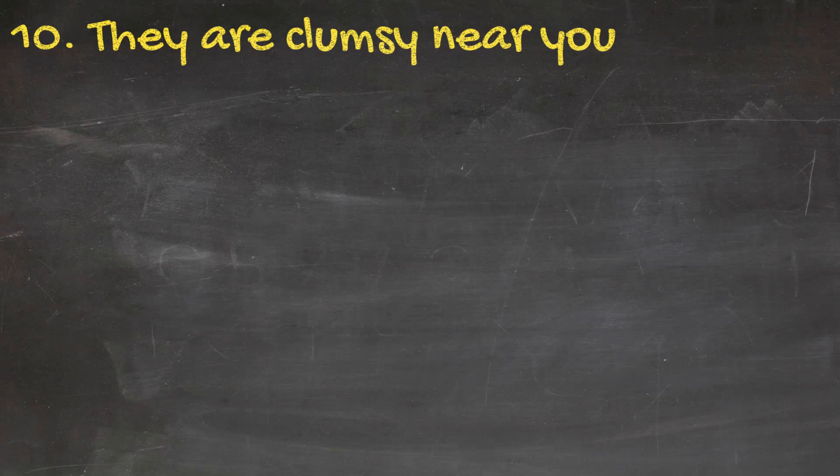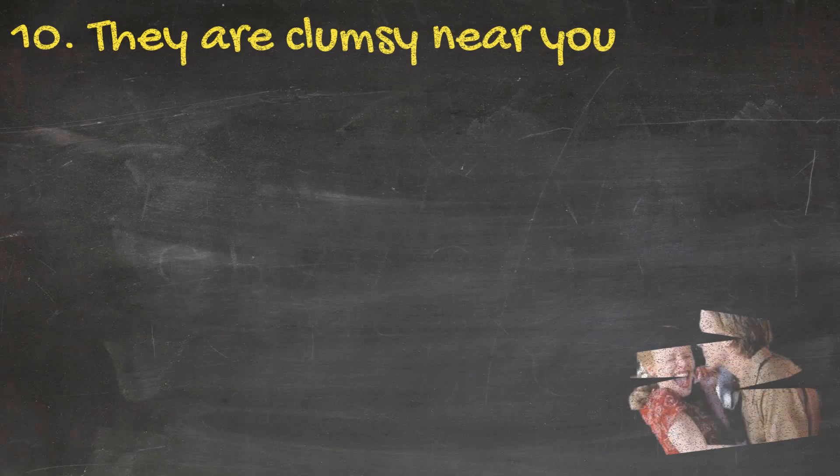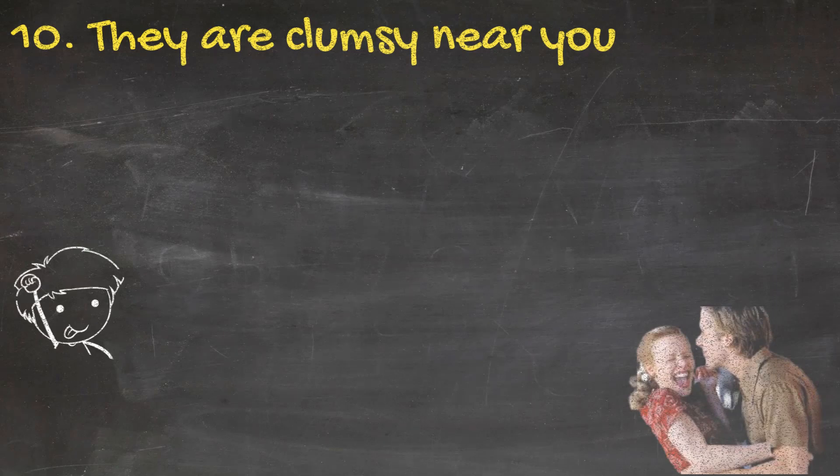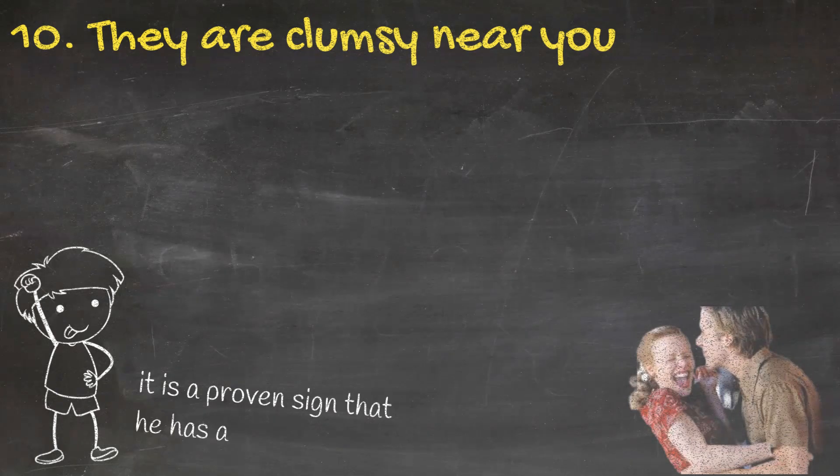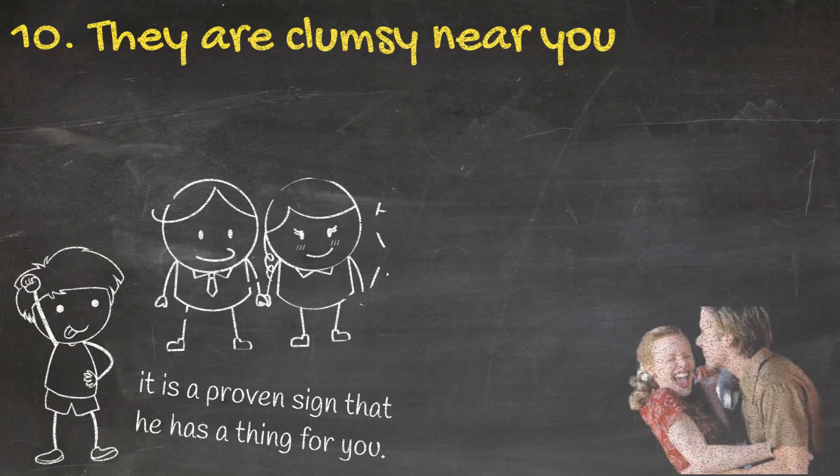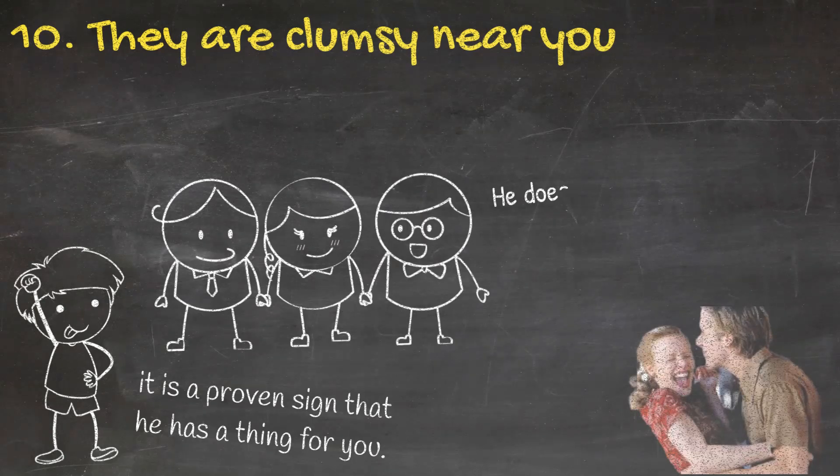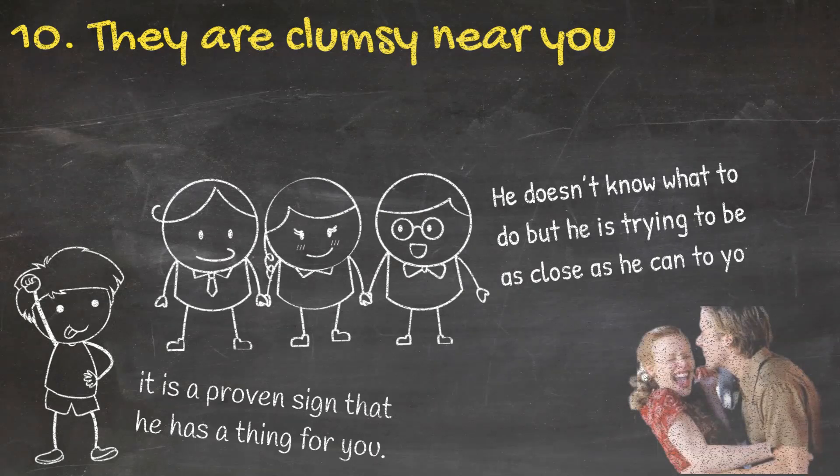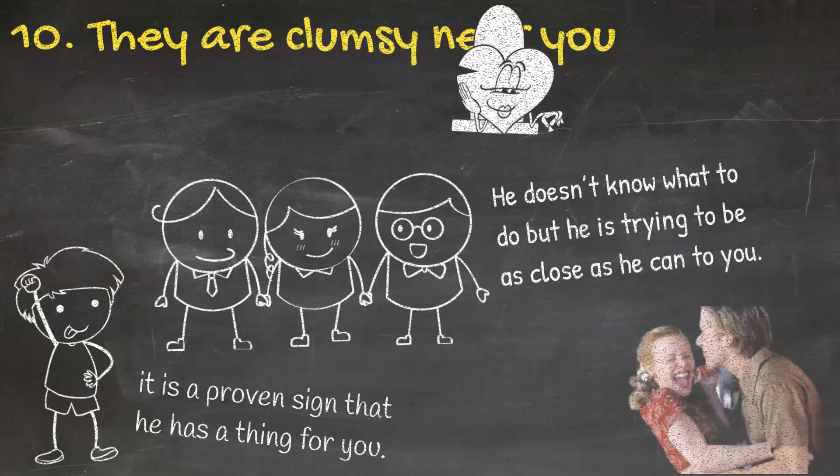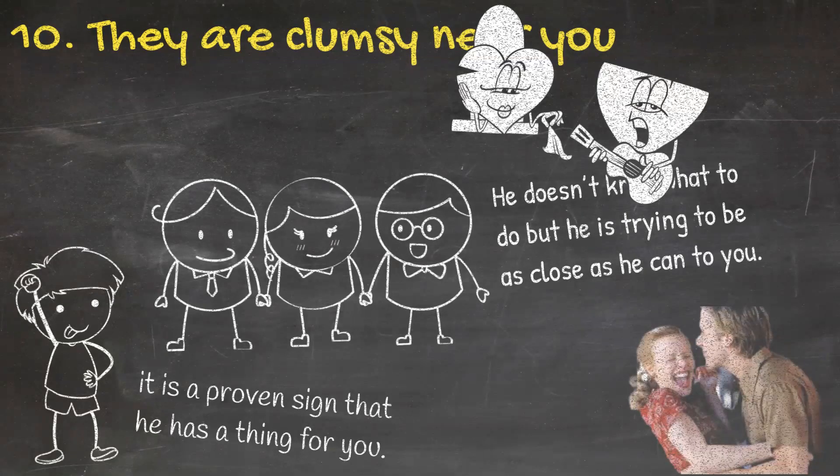Ten: They are clumsy near you. You know those scenes from the movies when a boy is madly in love with a girl but when he is close to her he is being all clumsy? Well, if that happens to you as well with some boy, it is a proven sign that he has a thing for you. He likes you but he is scared to admit it, and it is really hard for him to see you with other guys flirting with you. He doesn't know what to do but he is trying to be as close as he can to you. So the most important thing you can do is not laugh at him when he does something funny and help him so that he can see that you care about him as well.